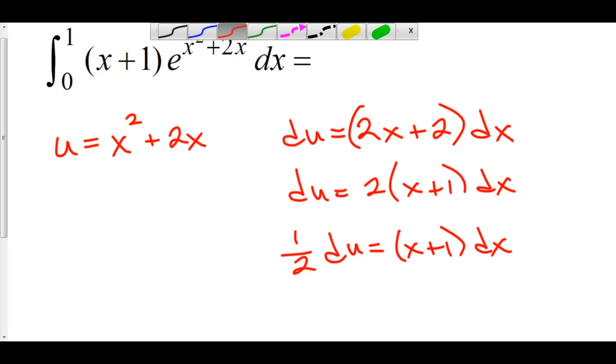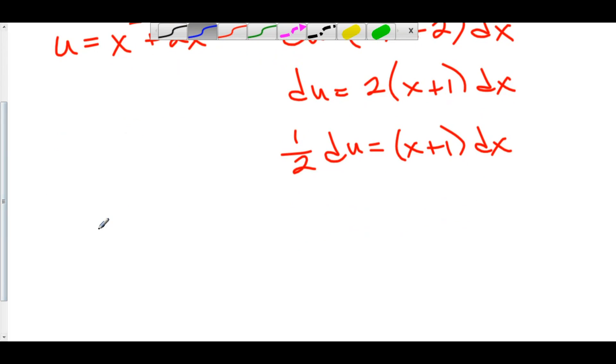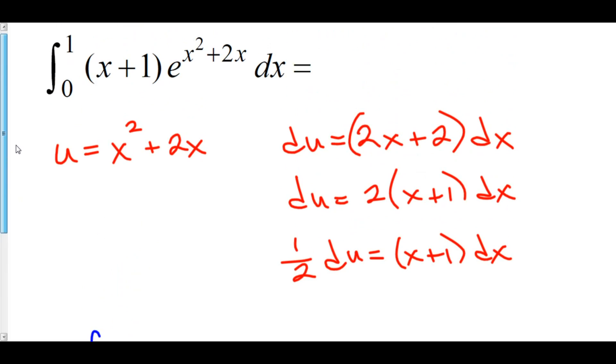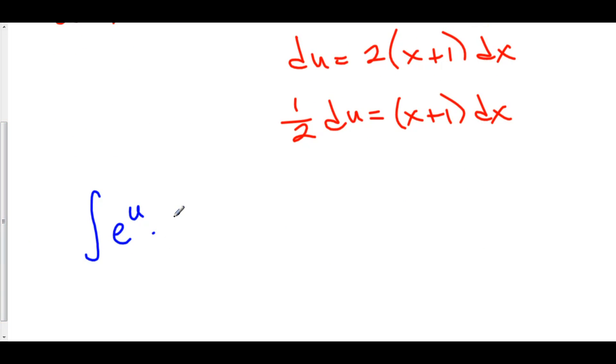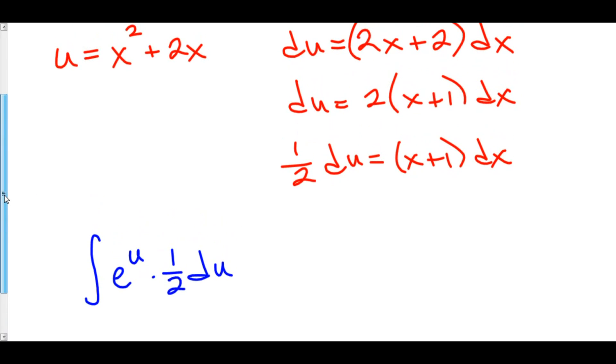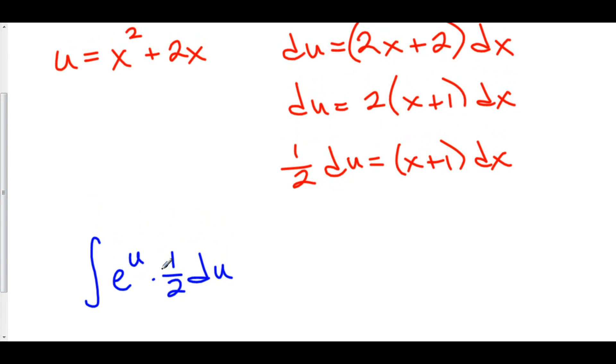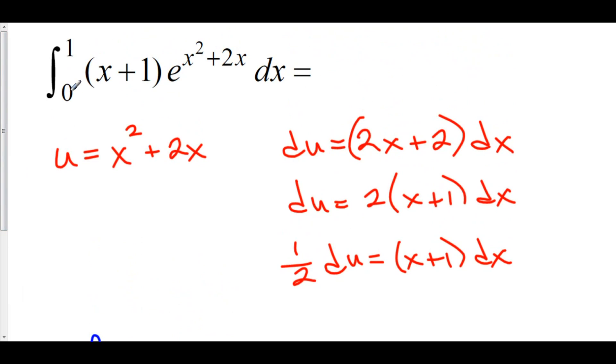Let's do that right now. So, we've got the integral, we've got e to the u. We've also got the 1 half du, replacing x plus 1 dx, so I'll multiply this by 1 half du. And we can also change our limits of integration, because we're in terms of u right now, so we could alter our limits of integration to accommodate that new u axis.